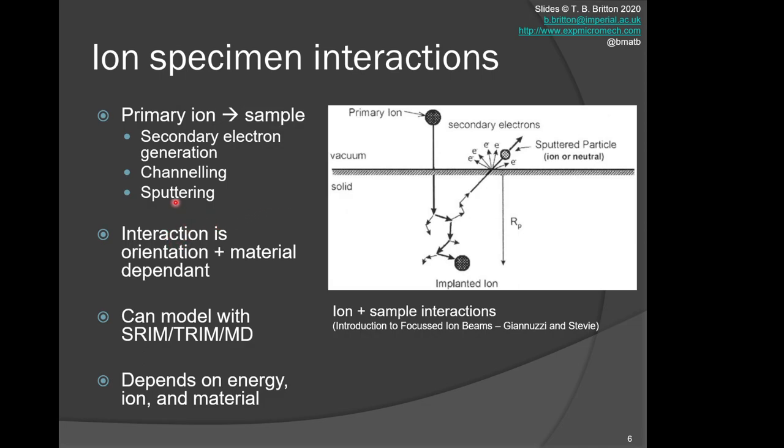The interaction due to channeling is orientation or crystal orientation dependent and material dependent. You can model these interactions using SRIM (stopping and range of ions in matter) code, TRIM, or molecular dynamics. The specific interactions depend on the energy of the ion and the material itself.